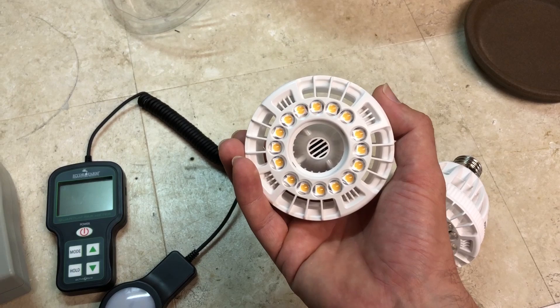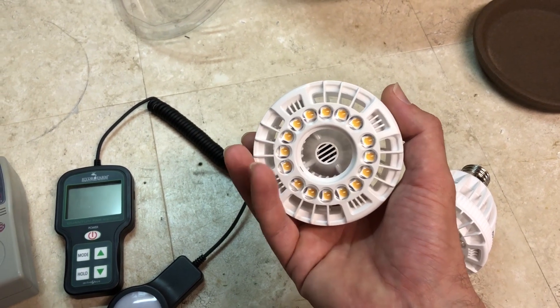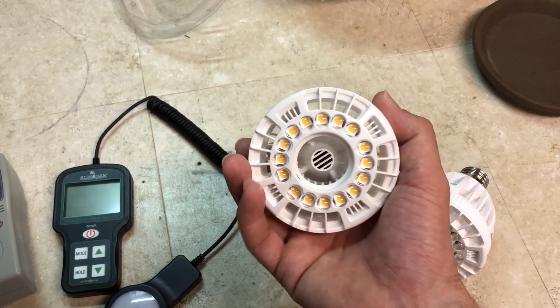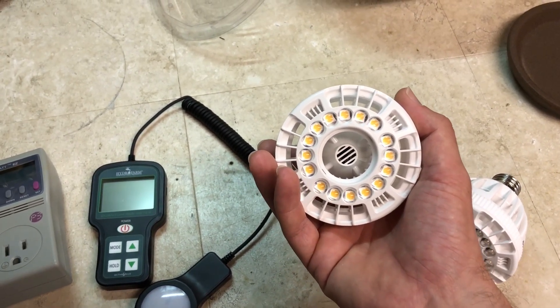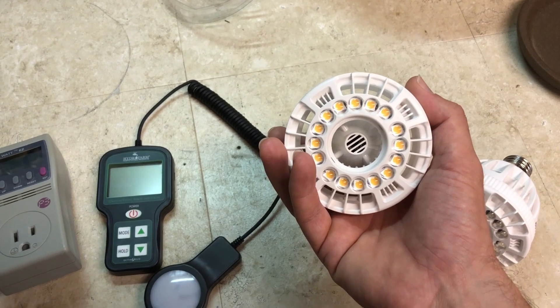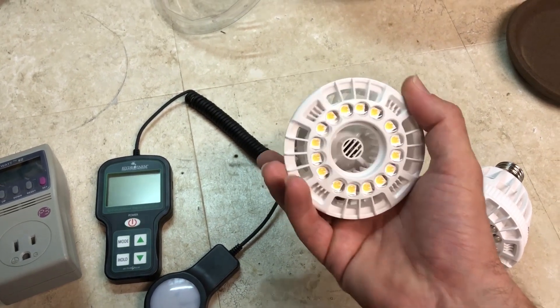and there's a phosphor coating. In this case, it looks yellow. But there's a phosphor coating over the blue diode, and that phosphor coating fluoresces, making the light white.